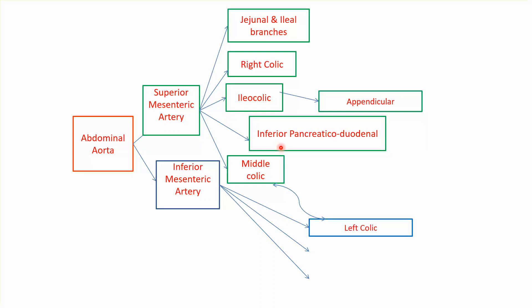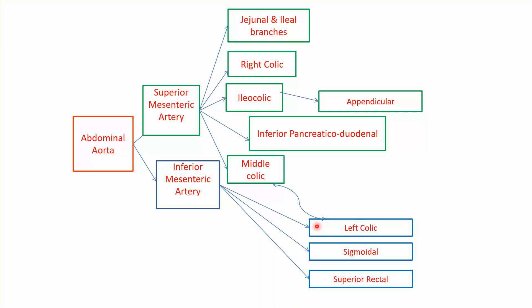The inferior mesenteric gives the left colic, which supplies the descending colon. The left colic and the middle colic will anastomose with each other. The inferior mesenteric also gives the sigmoid artery supplying the sigmoid colon, and the superior rectal artery supplying the upper part of the rectum. The rectum is supplied by three arteries: the superior rectal from the inferior mesenteric artery, the middle rectal from the internal iliac artery, and the inferior rectal from the internal pudendal artery.